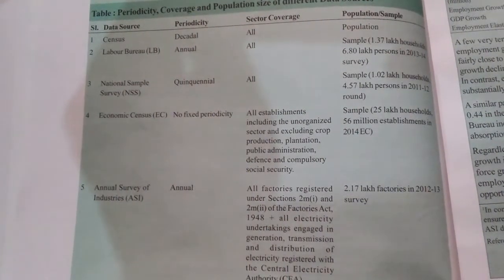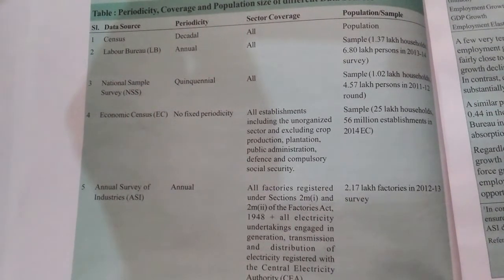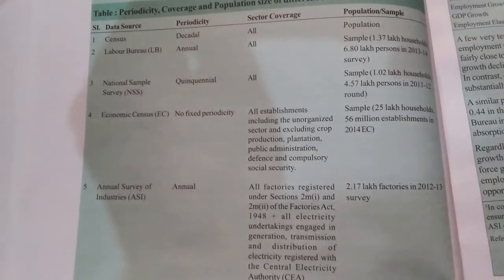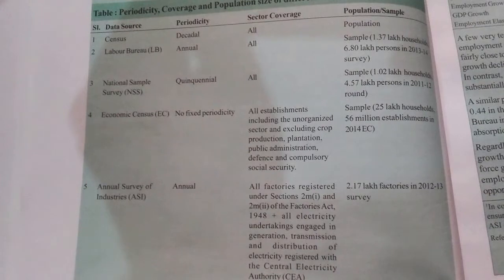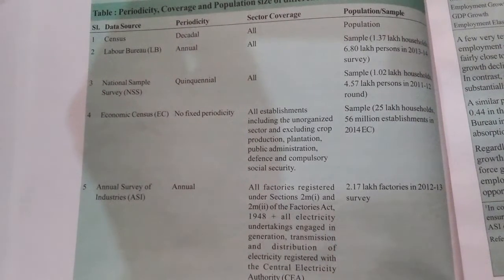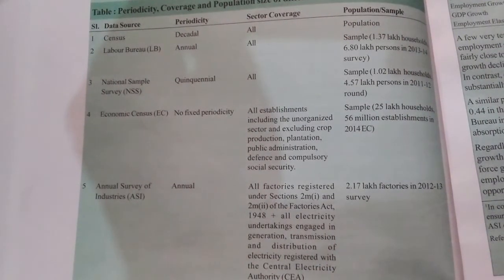The second is Labor Bureau. Periodicity: annual. Sector coverage: all. Population object sample: sample of 1.7 lakh households. Number three is National Sample Survey, assessed quinquennial, every five years. Sector coverage: all. A sample is also taken into account in this methodology of measurement.